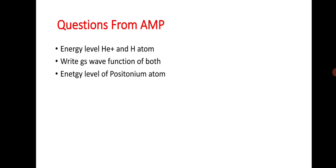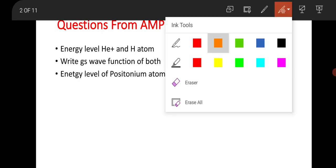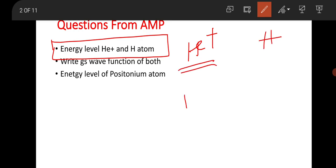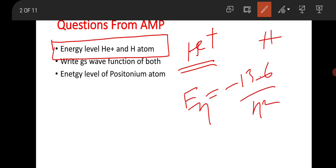Some questions were taken from atomic and molecular physics, but actually they asked very few questions from this area. They asked about the energy level difference of a helium atom, helium-plus atom, and hydrogen atom. The energy of a hydrogen atom is minus 13.6 eV divided by n-squared, but for hydrogen-like atoms it will be multiplied by Z-squared, so you can calculate it easily.